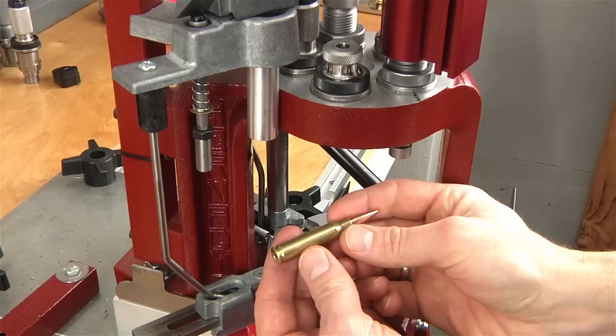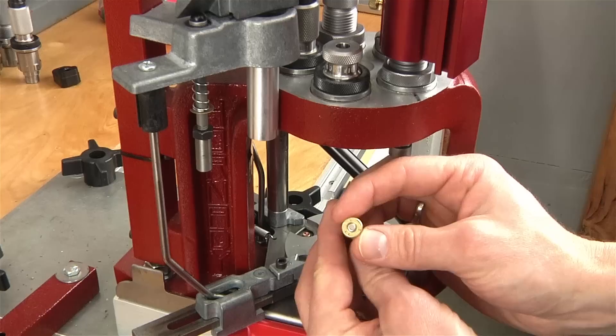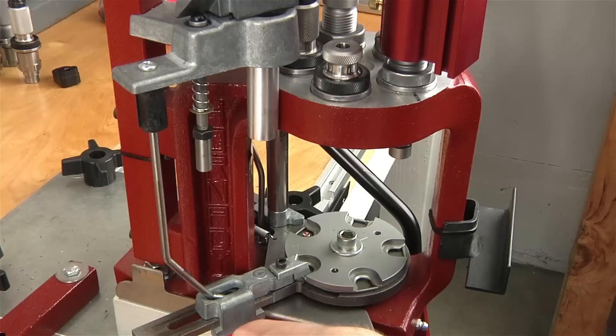Now would be a great time to measure the overall cartridge length. You could do that either with a comparator or digital caliper that's going to measure from tip to tail. I've already done that here and it appears that things are set up well. We've got a good primer, everything looks good. So we're ready for a full progressive operation.